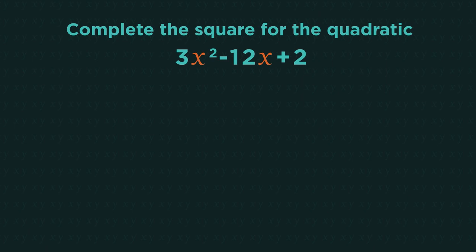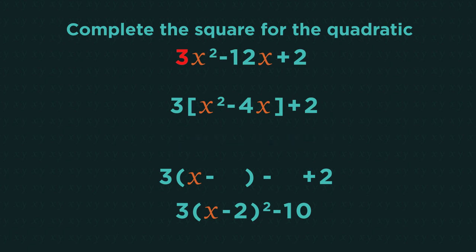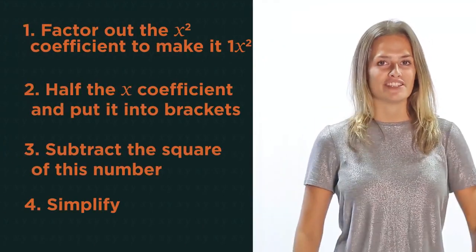So let's have a quick look at what happens when the coefficient of x squared isn't 1. I'll get you started and then you can finish it off. So start by factoring 3 out of the 3x squared and the negative 12x to give us x squared on its own. Leave the 2 alone. Now you can complete the square. Pause the video, complete the square, and click play when you're ready to check. Did you get it right? 3 times x minus 2 squared minus 10. So there we have completing the square for any quadratic with or without an x squared coefficient of 1.